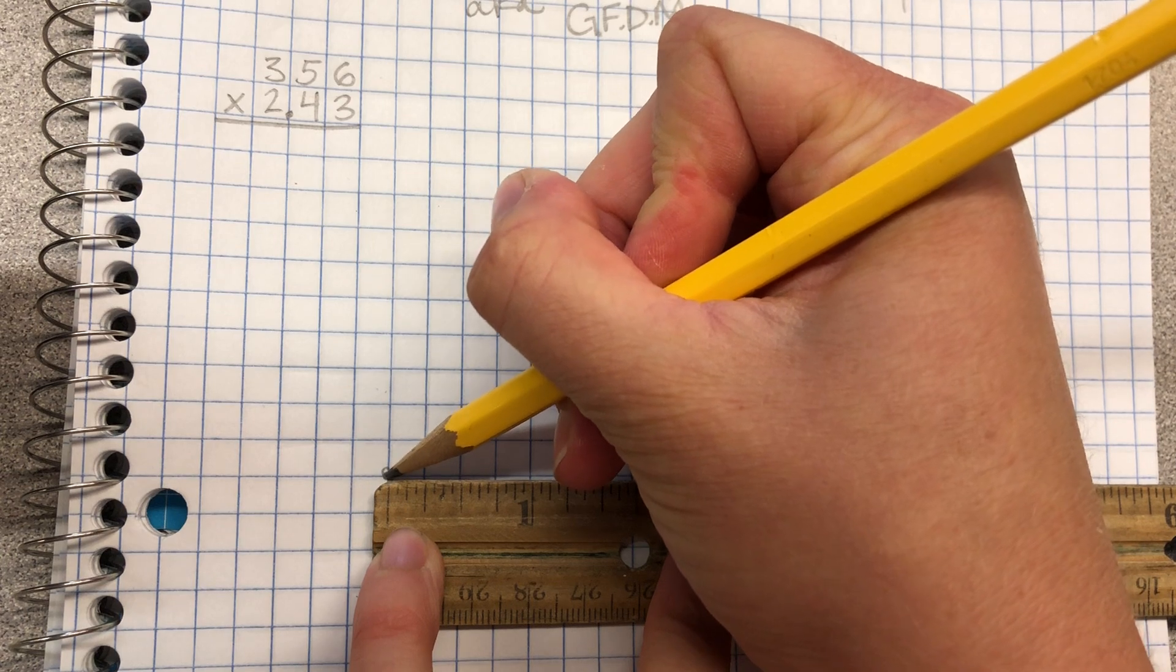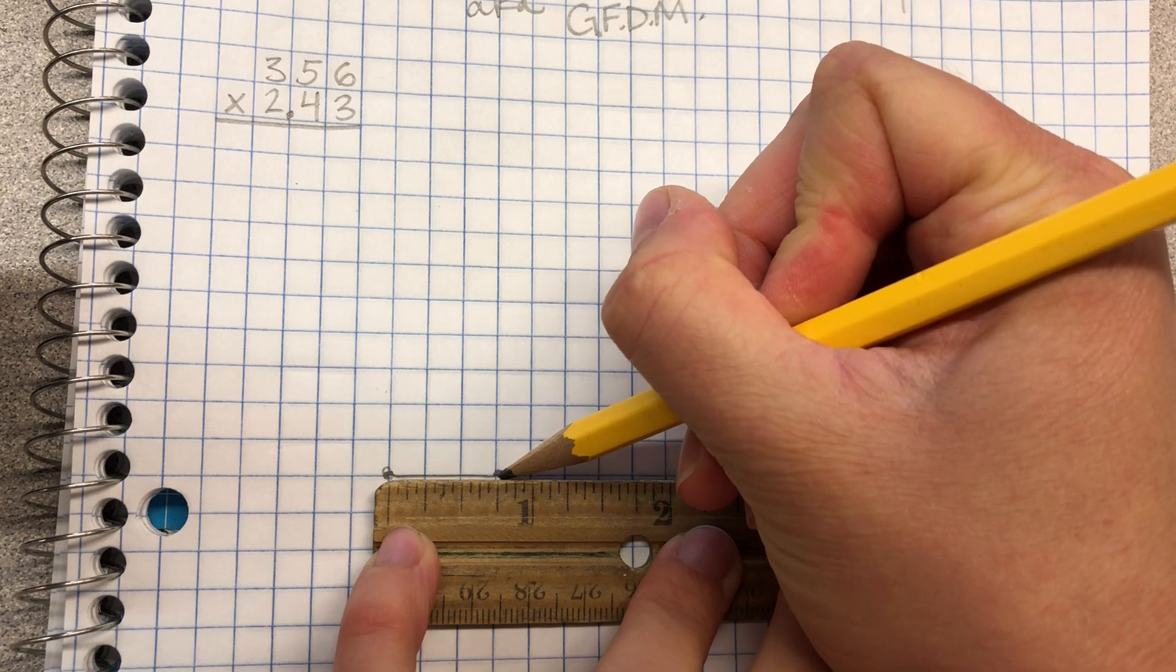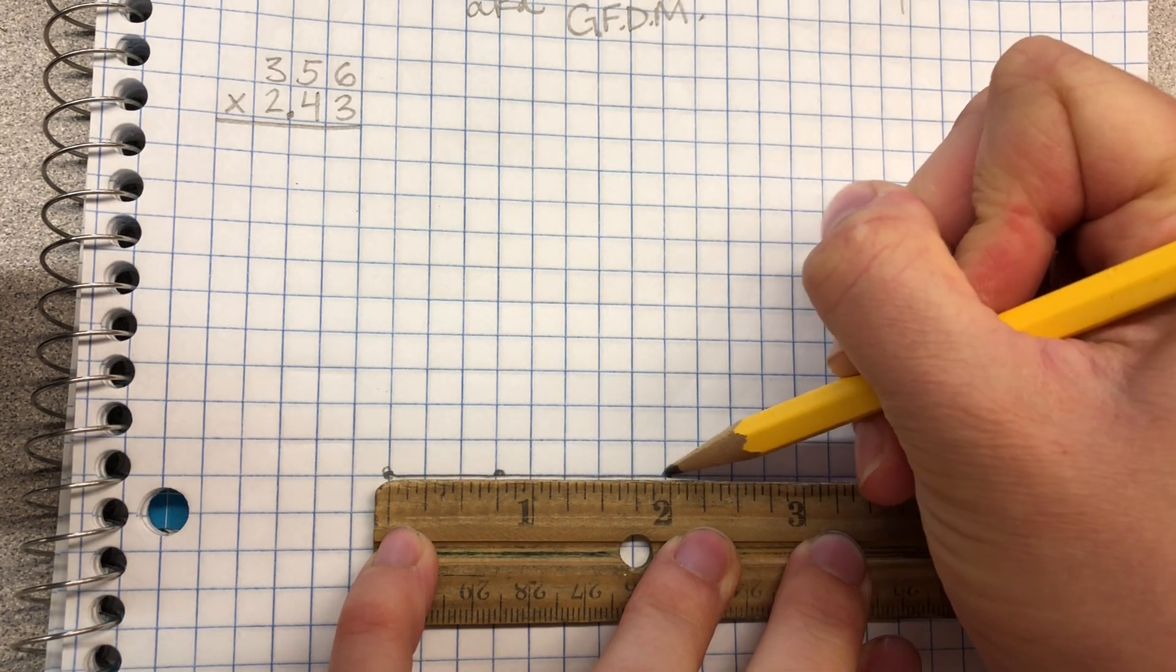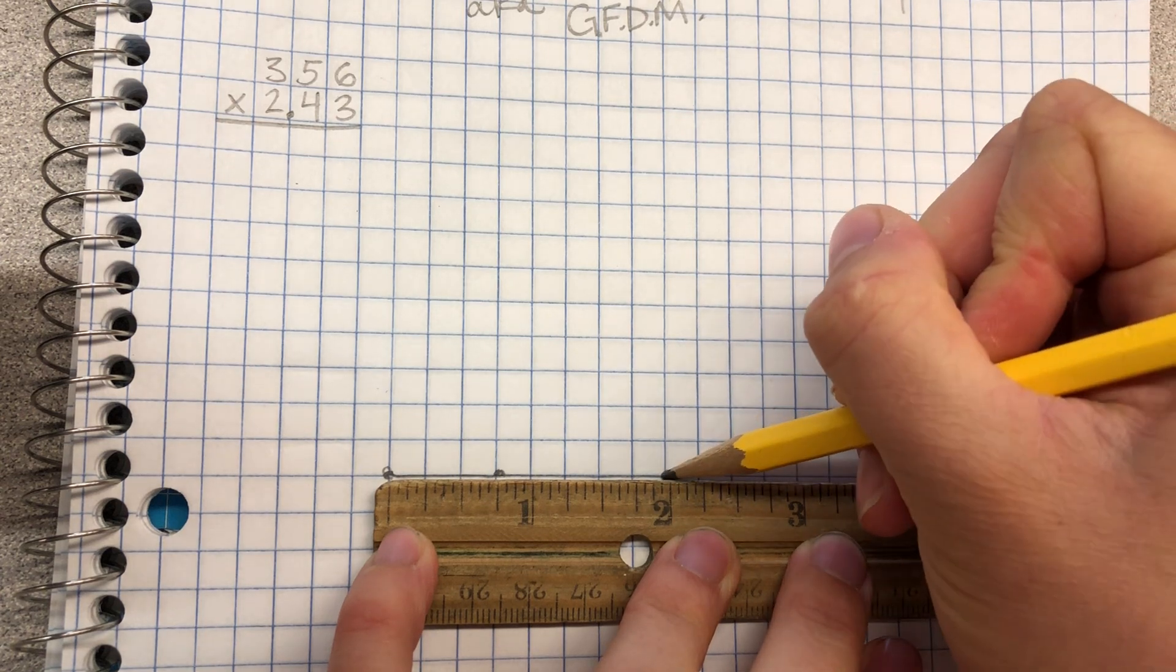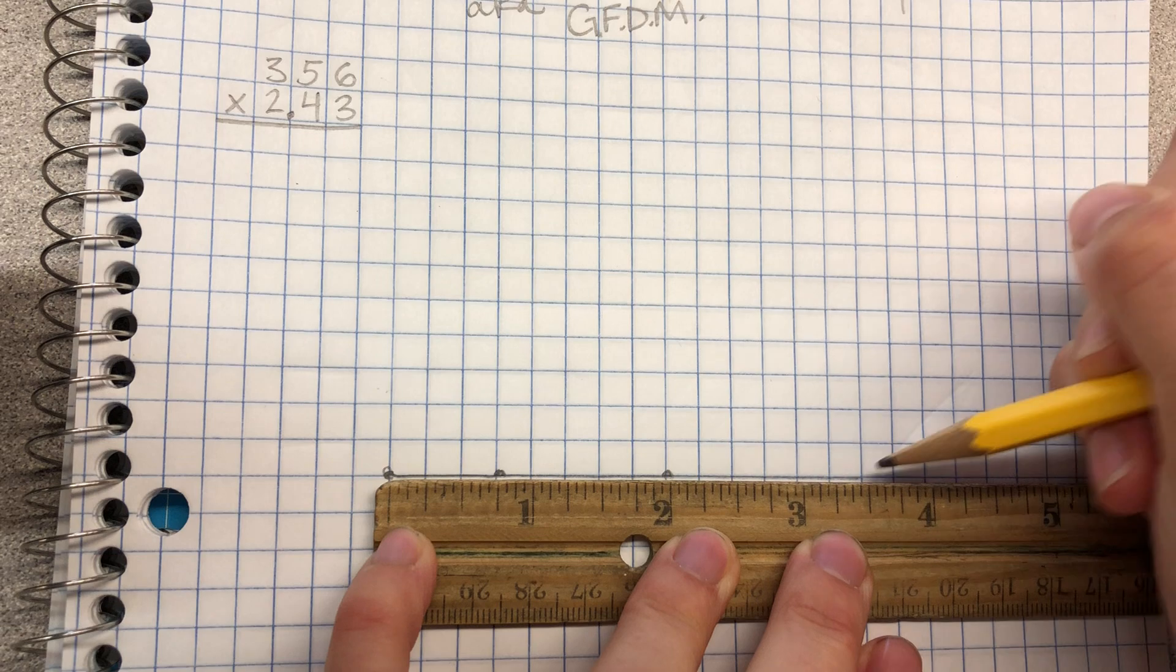I'm going to make a dot, count over 3: 1, 2, 3, make a dot. 50: 1, 2, 3, 4, 5, make a dot. And 6: 1, 2, 3, 4, 5, 6, make a dot.